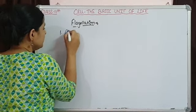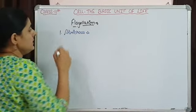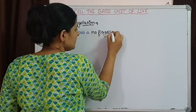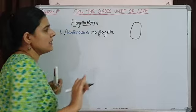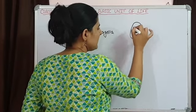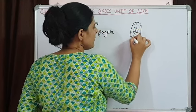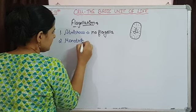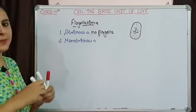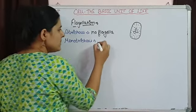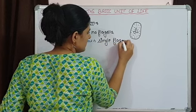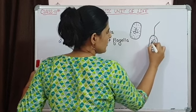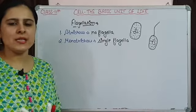A bacterium can be atrichous — those bacteria which do not have any flagella. The bacterial cell is devoid of any flagella; the genetic material and cytoplasm are present but flagella is absent. The second type is monotrichous — mono means one, so only one single flagellum is present on the bacterial cell.